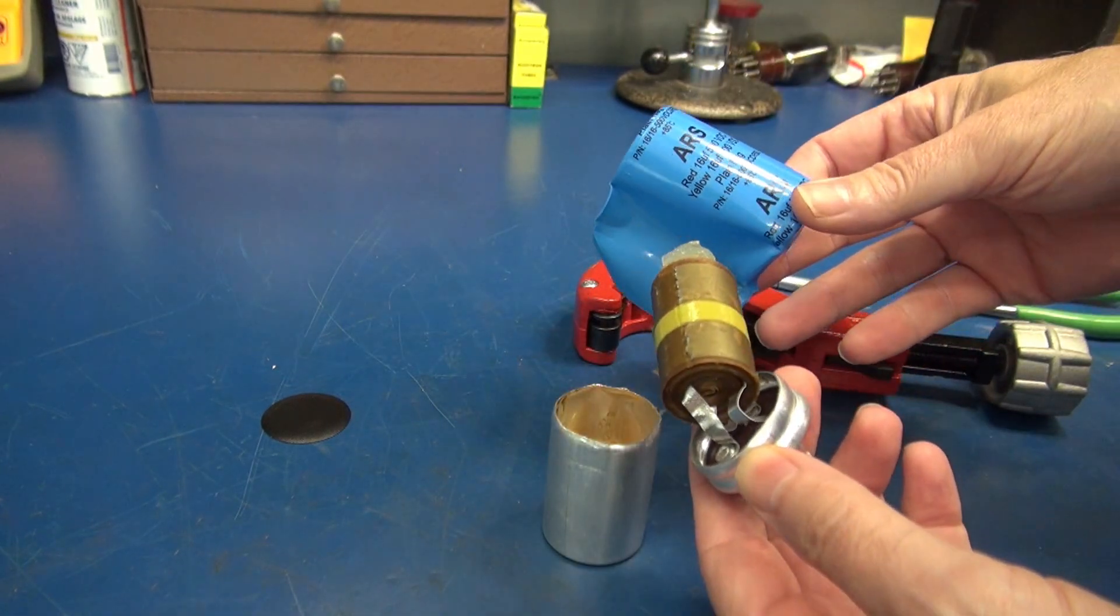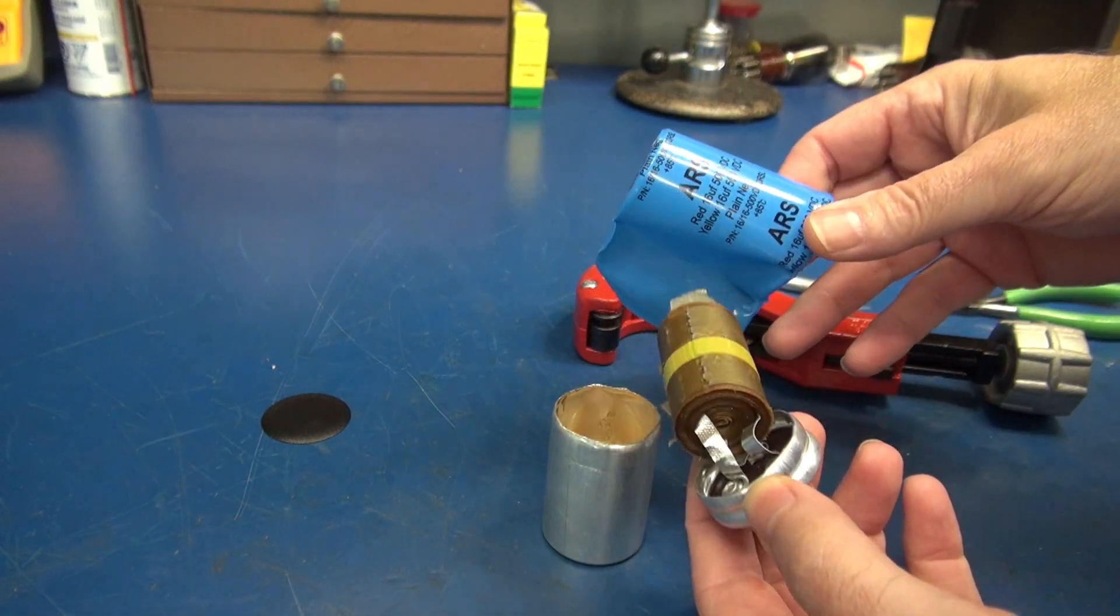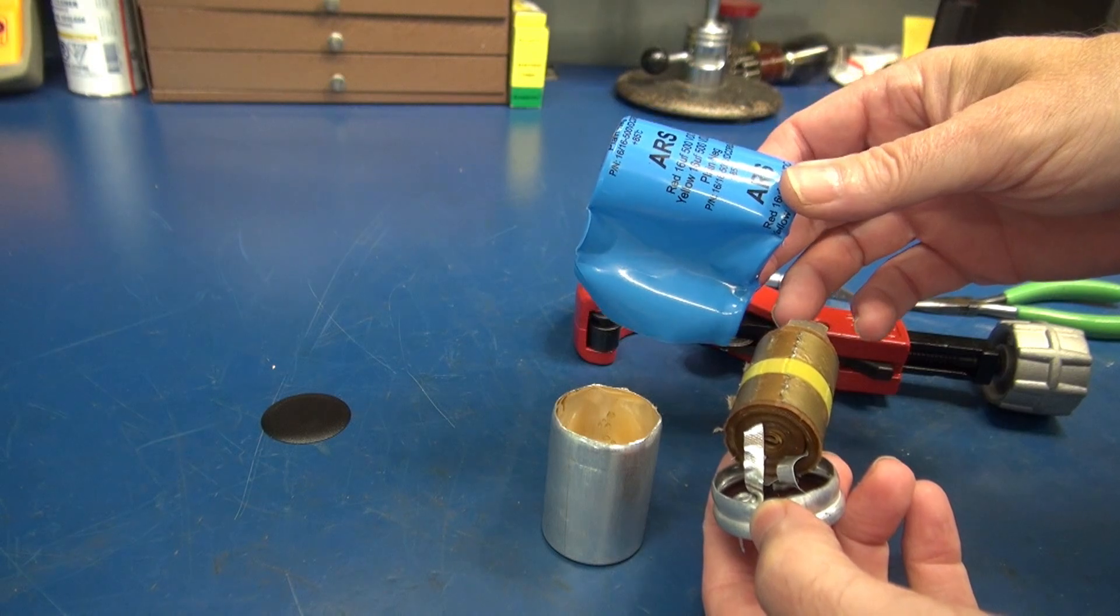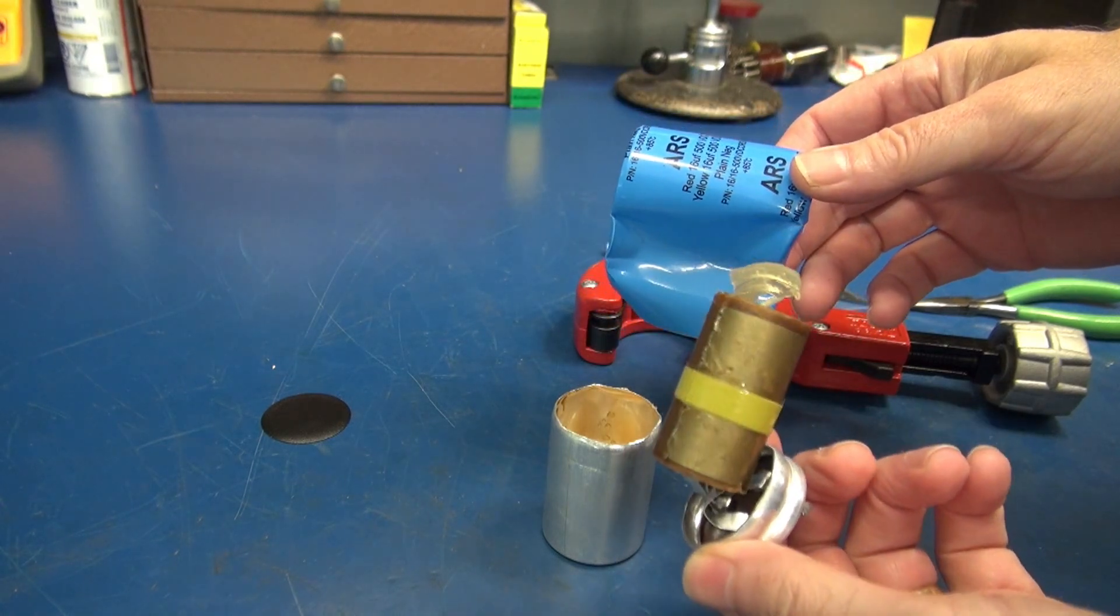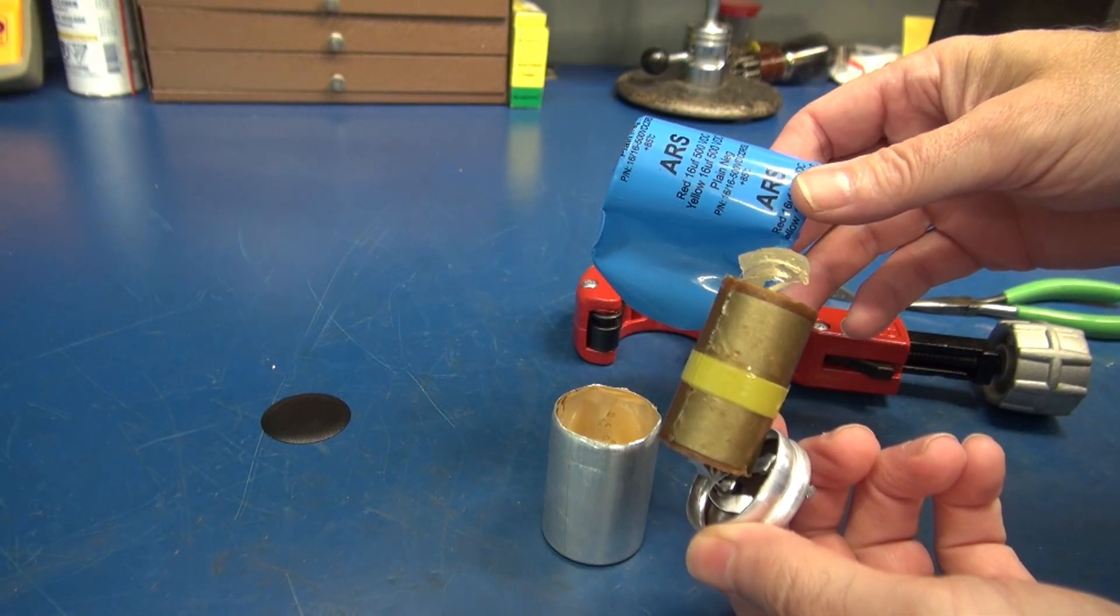So there you have it, the insides of the ARS filter capacitor. I have actually used these in ham radio repair, and after seeing this, I'll continue to do so.